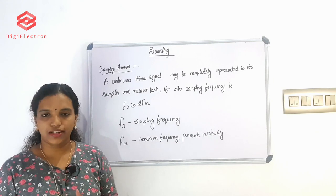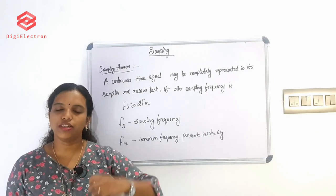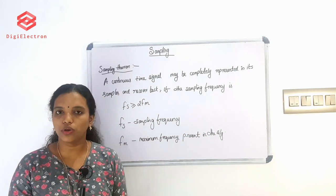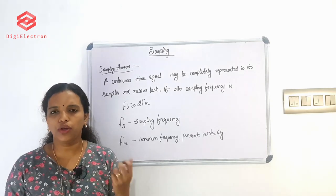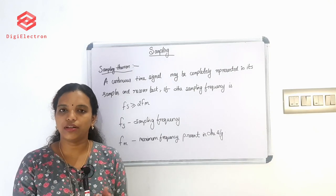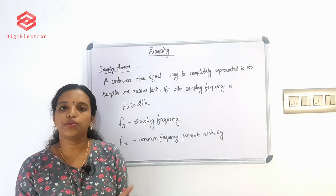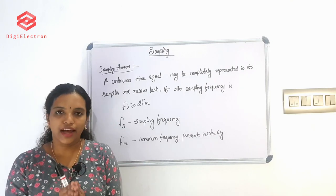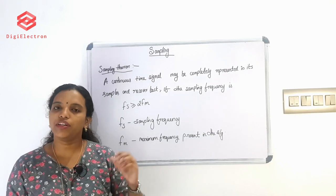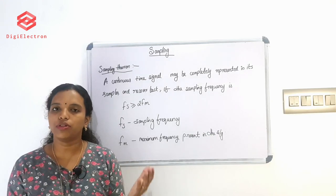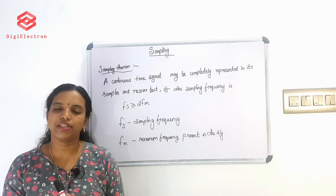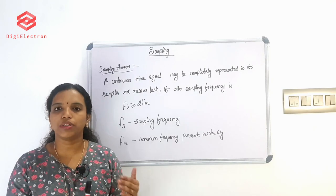We are going to take a look at sampling. We are going to send data to a transmitter. We are going to send a lot of noise, signal distortion, or hacking. We are going to take a look at the channel. We are going to send a message signal to a high frequency transmitter. On the receiver side, this is a carrier signal. We are going to remove the message signal. This is the communication process.